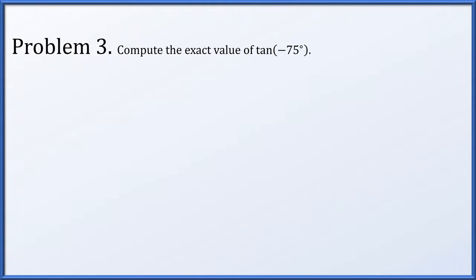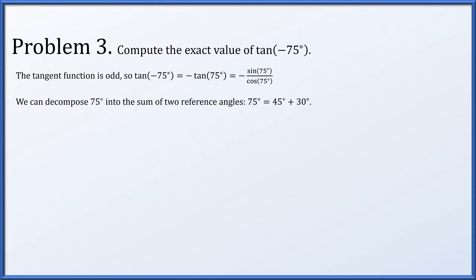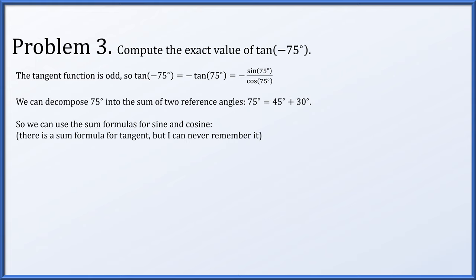Next, let's compute the exact value of the tangent of negative 75 degrees. The tangent function is odd, so I'll factor out the minus sign and instead compute minus sine of 75 degrees over cos of 75 degrees, because 75 degrees can be decomposed into the sum of two reference angles: 45 degrees plus 30 degrees. So we can use the sum formula for sine and cosine. Rather than the tangent sum formula, we'll handle sine and cosine separately. So tangent of negative 75 degrees is expressed as negative sine of 75 degrees over cos of 75 degrees.